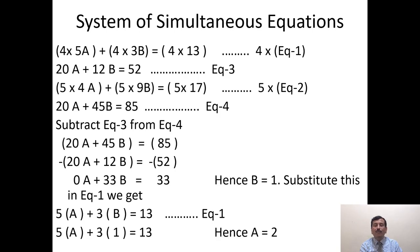20A minus 20A becomes 0A. 45B minus 12B equals 33B, and 85 minus 52 equals 33. So 33B = 33, therefore B = 1. We substitute the value of B into equation 1: 5A + 3B = 13, so 5A + 3 = 13, therefore 5A = 10, so A = 2. This is the simple elimination method.